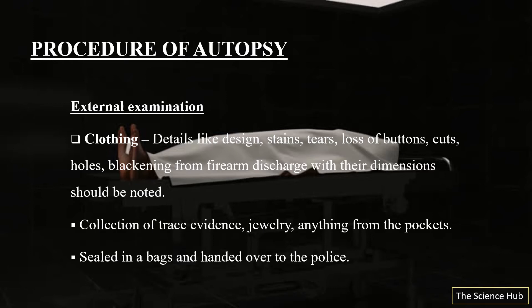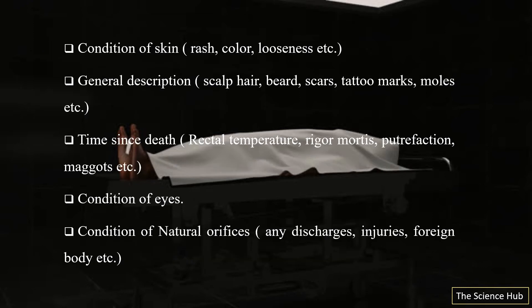The condition of the skin is also noted — rashes, color, and looseness of the skin. The general description of the body is recorded, including scalp, beard, scars, tattoo marks, moles, etc. Time since death is also assessed by checking rectal temperature, rigor mortis, putrefaction, and maggots. The condition of the eyes is also noted — whether any color changes are present — along with many other perspectives.